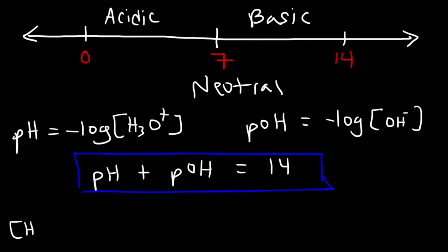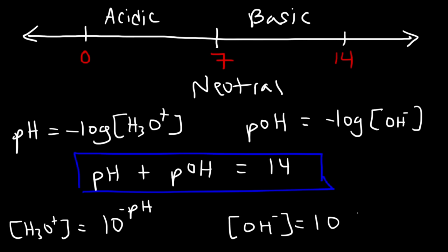If you need to find the H₃O⁺ concentration, it's 10 raised to the negative pH. If you need to find the hydroxide concentration, it's 10 raised to the negative pOH. Those are some key equations useful when learning about acids and bases.